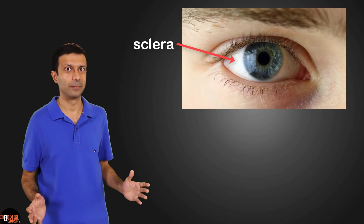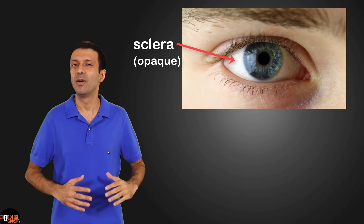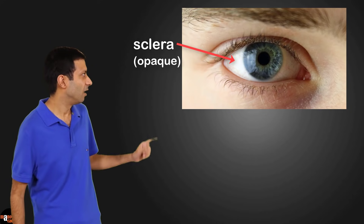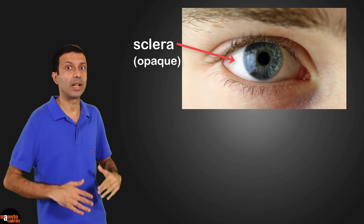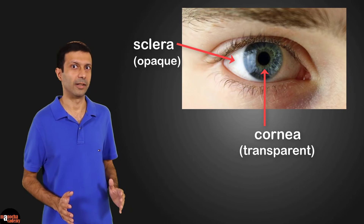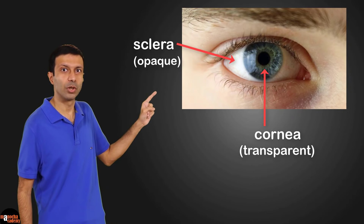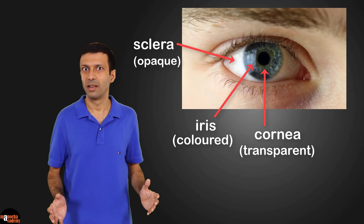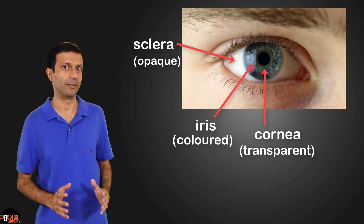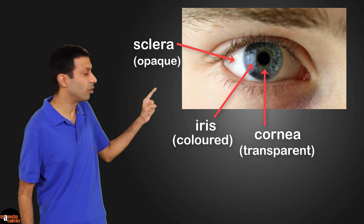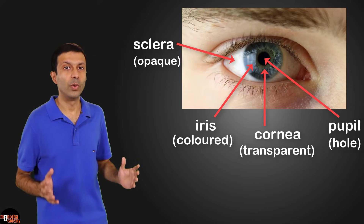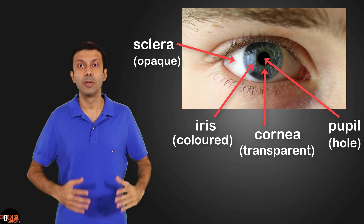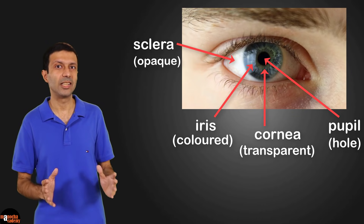Let's start with the front portion of the eye. The white portion of the eye is called the sclera — it's opaque and acts as a protective layer. The circular part in the center has a transparent layer on it called the cornea. The colored portion of the eye is called the iris, which controls the amount of light entering the eye. There's a hole in the center of the iris called the pupil through which light enters the eye.